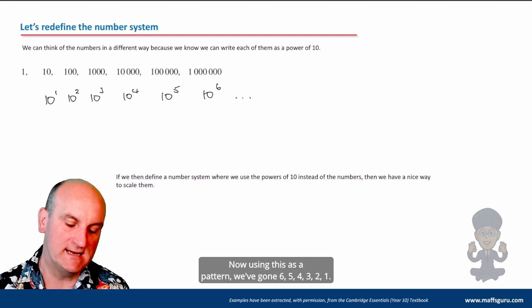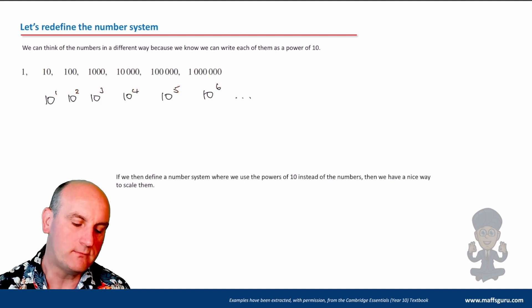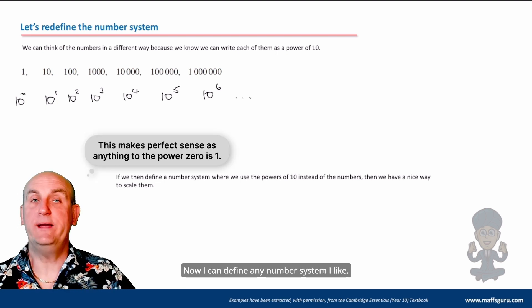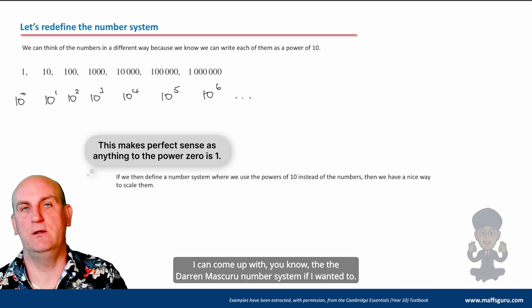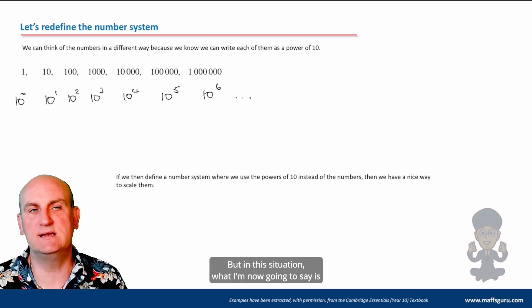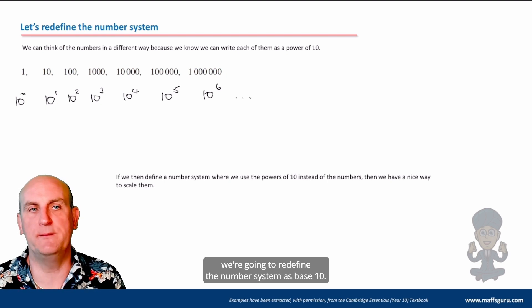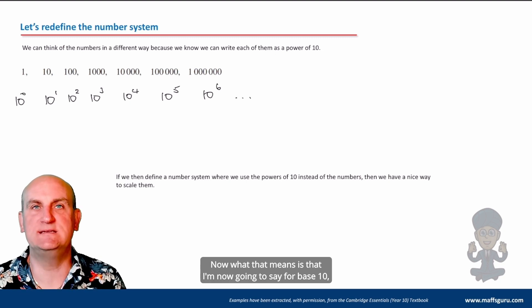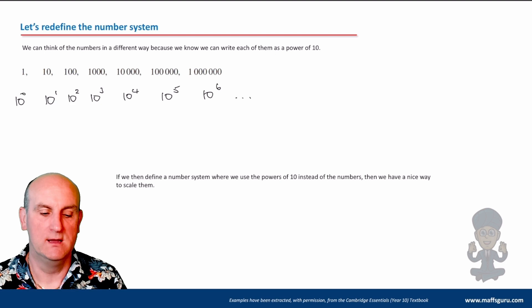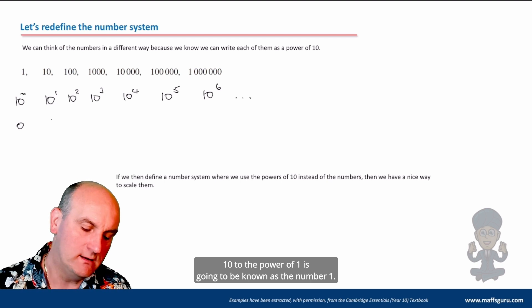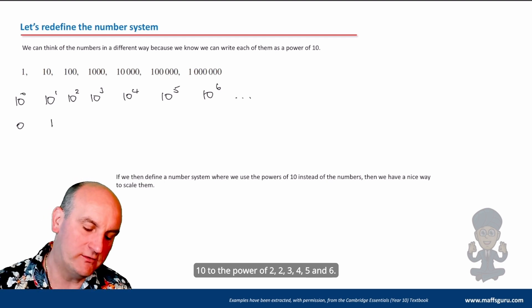So what I'm now going to do is I'm going to start redefining my number scale. I'm going to use powers of 10. I'm going to rewrite all of these numbers as a power of 10. So this one here would be 10 to the power of 1, this one here would be 10 to the power of 2, 10 to the power of 3, 10 to the power of 4, 10 to the power of 5, 10 to the power of 6.